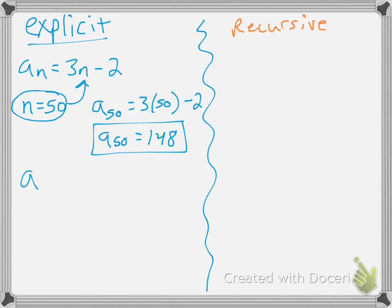You need to be able to evaluate explicit formulas. For example, pause and find the amount of the 21st term. When you plug 21 in for n: 3 times 21 is 63, and 63 minus 2 is 61. Hopefully you're comfortable doing that.